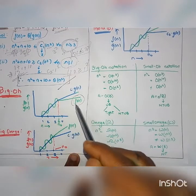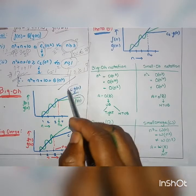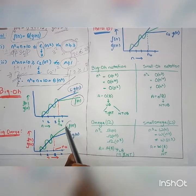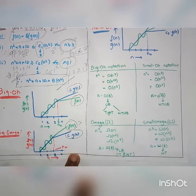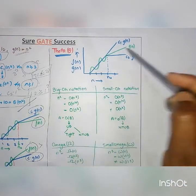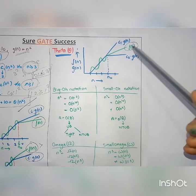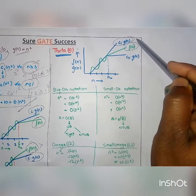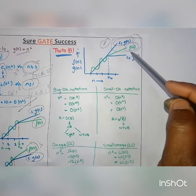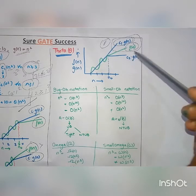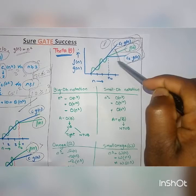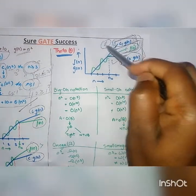In Big O, the definition says f(n) ≤ c·g(n) — g(n) is the upper bound. In Big Omega, f(n) ≥ c·g(n) — g(n) is the lower bound. In Theta, there are two conditions: f(n) ≤ c₁·g(n) is the first condition, and f(n) ≥ c₂·g(n) is the second condition, because Theta has two bounds.